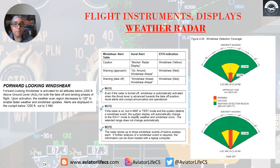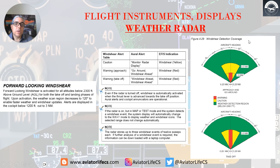If the radar is on but in map or test mode and the system detects a wind shear, the system display will automatically change to the weather plus turbulence mode to display weather, wind shear, and wind shear icons. The selected range does not change automatically. Here you can see the wind shear detection coverage during approach and go-around, and this is during takeoff.